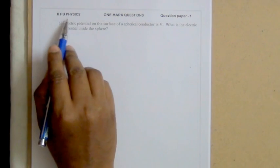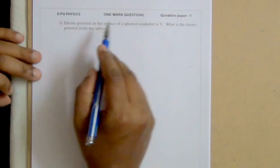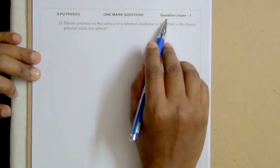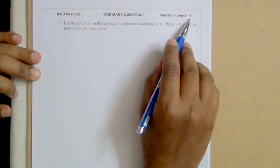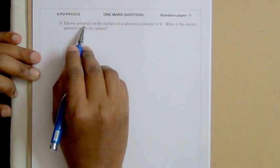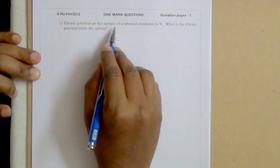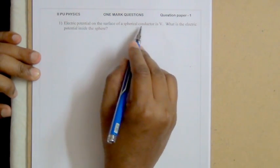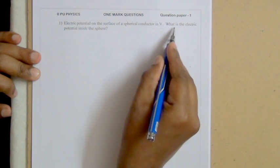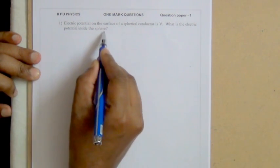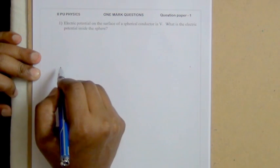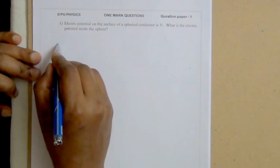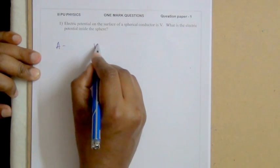Hello, Second Year Physics. One more questions question paper. The first question: electric potential on the surface of a spherical conductor is V. What is the electric potential inside the sphere? Answer: it is V.